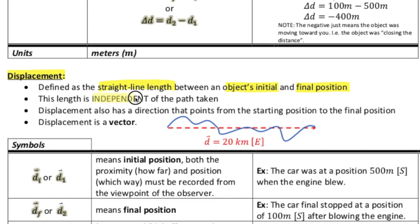And hence, the displacement is independent of this path. Displacement also has a direction that points from the starting position and to its final position. So displacement is a vector. So when we take a look down here, I have that distance that we had up before.